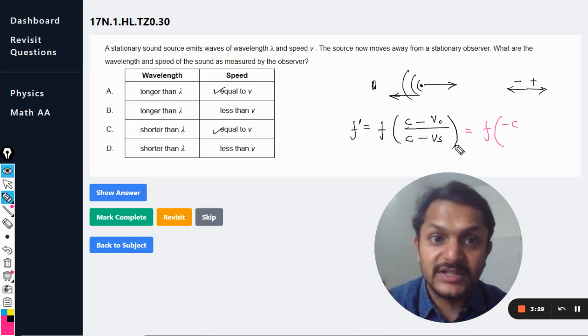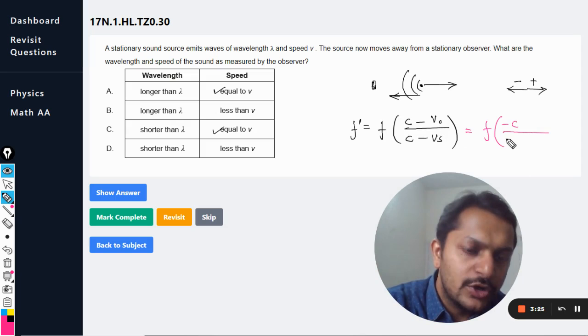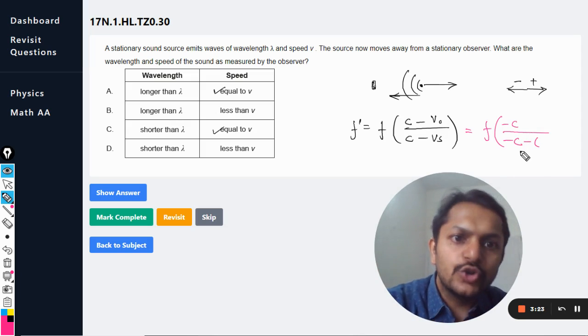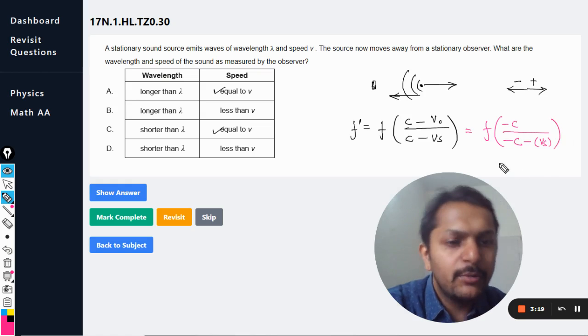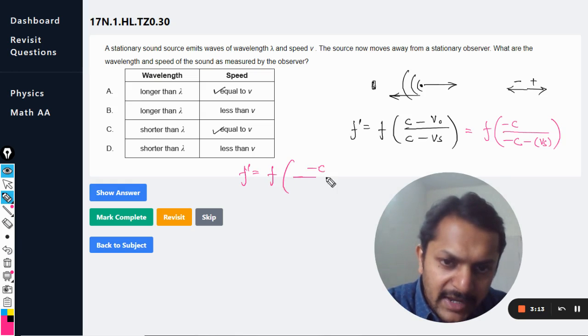This becomes negative c because the sound is moving towards left. Observer is stationary, so that is zero. Source is moving in the positive direction, so that will be taken as v_s positive. So overall, f' is f into (-c) divided by (-c - v_s). The negative sign can now be taken common.